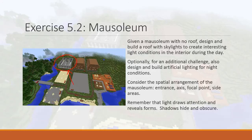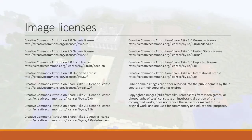Remember that light draws attention and reveals forms, whereas shadows hide and obscure. If you want people to pay attention to something, light it — and if you want to hide things, keep them in shadow. I'll do the exercise in the next video. Here are the image licenses, and that's it for this lecture. I will see you in the next video, where we experiment with light.